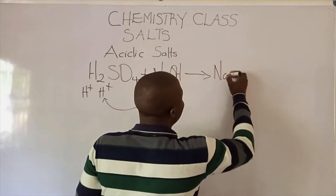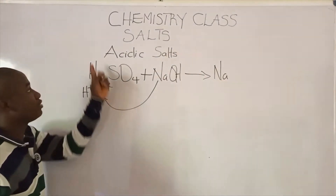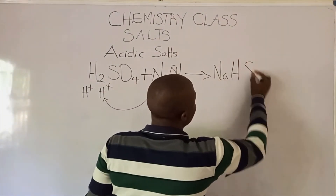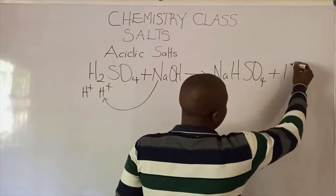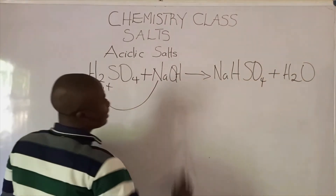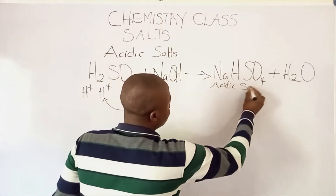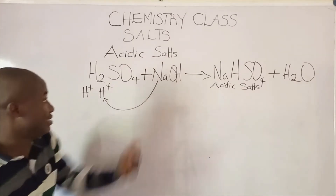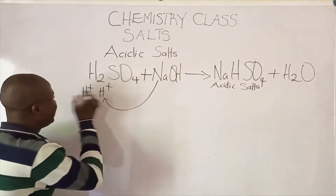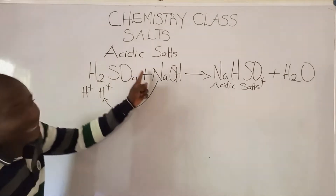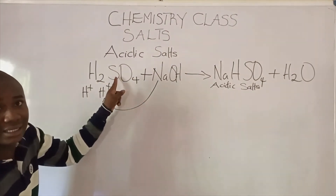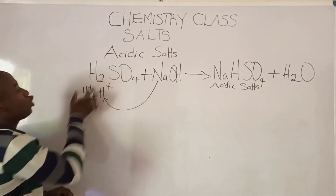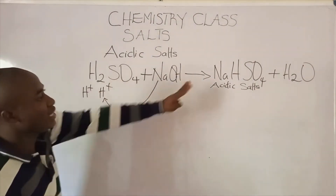The sodium has replaced one hydrogen ion. Here we have two hydrogen ions, so one remains. We now have NaHSO₄ plus H₂O. This is the acidic salt formed. You can see here the sodium ion did not completely replace the hydrogen ion — in this acid we have two hydrogen ions, so sodium just replaced one, leaving one hydrogen ion remaining along with the sodium.